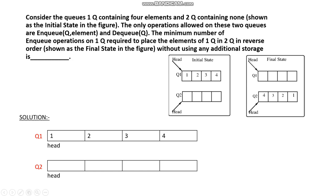So this is the initial state — Q1 and Q2. In Q1, elements one, two, three, four are there. We have an action column and a queue operation on Q1 column. This counter will count the ENQ operations on Q1, and the action column shows all actions which are going to be performed on Q1 and Q2.